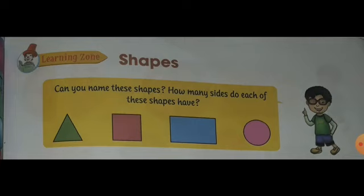The second one is square. It has four sides. The third one is rectangle. Rectangle has four sides. The fourth one is circle, and it has only one side.